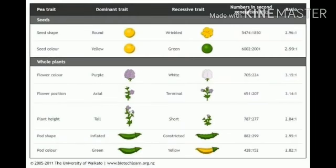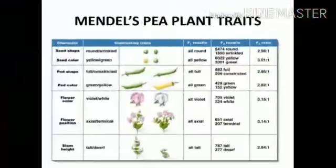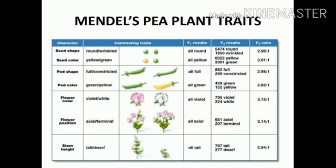The dominant traits are: round, yellow, purple, axial, tall, inflated, and green. The recessive traits are opposite to these — opposite to round is wrinkled, opposite to yellow is green, opposite to full is constricted, opposite to green is yellow, opposite to violet is white, opposite to axial position is terminal position, and opposite to tall is dwarf.